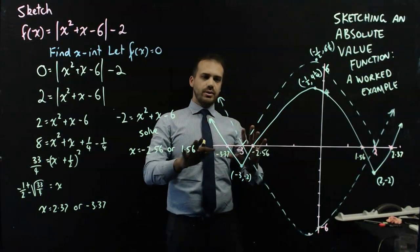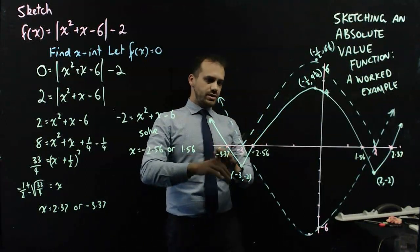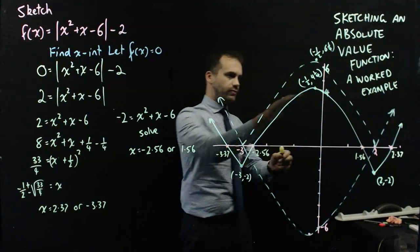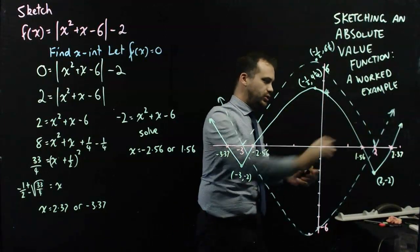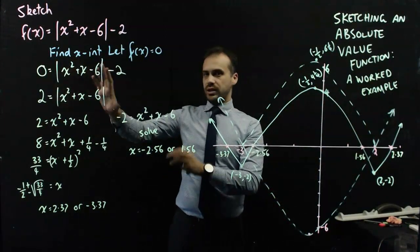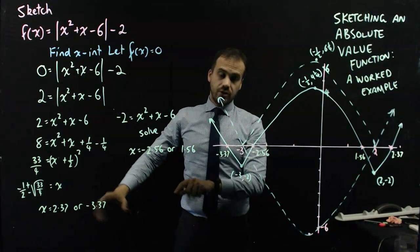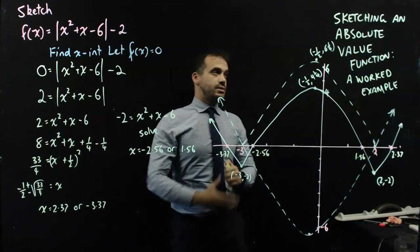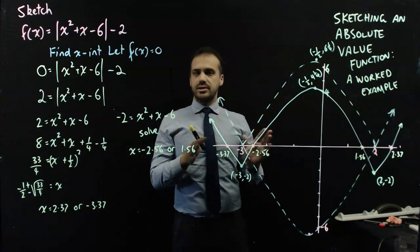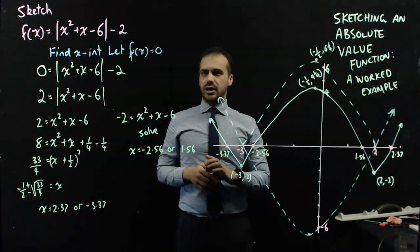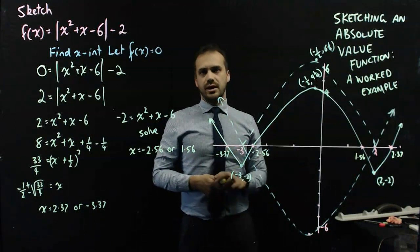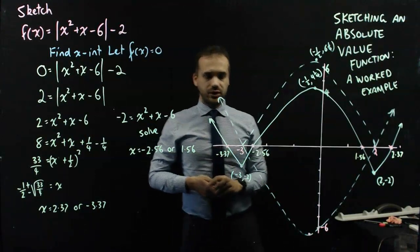There's a lot going on there. You can see I drew 3 functions before settling on my final function, and then I had to solve an absolute value equation to get 4 answers. That's a pretty hectic question, but that's the kind of thing you need to do when you're sketching an absolute value function.